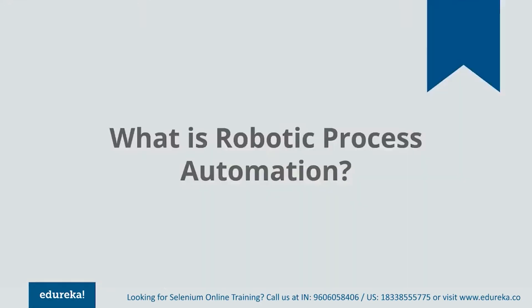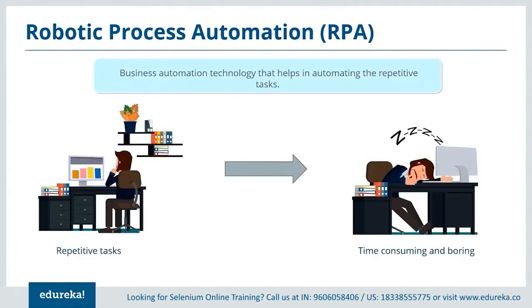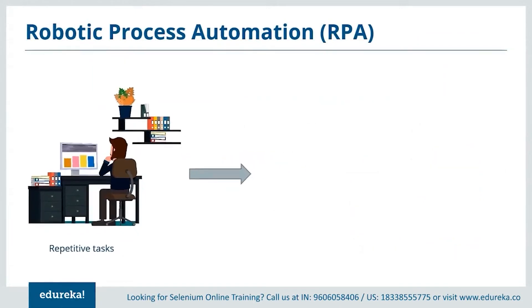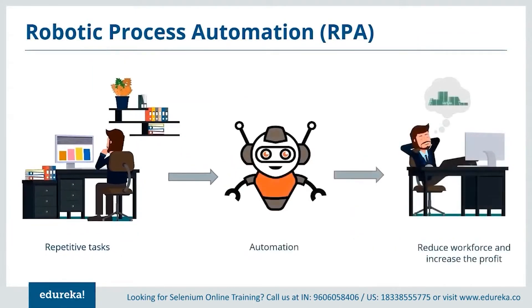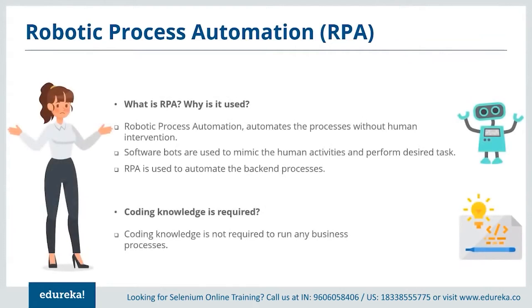Now let's move on to understand what robotic process automation is, commonly called RPA. Repetitive tasks are very tedious and take most of our time, which gradually decreases productivity and results in the downfall of an organization. If we try to complete the same task by automating it, the time taken to finish the task is reduced, the rate of productivity increases, and the number of errors are reduced. RPA was coined with the vision of empowering business users to create software bots that would interact with the system just like humans. It is a combination of artificial intelligence and automation.